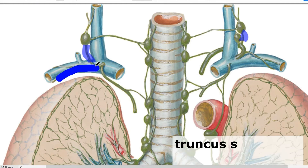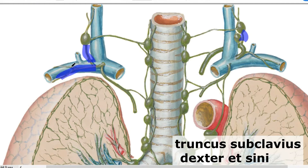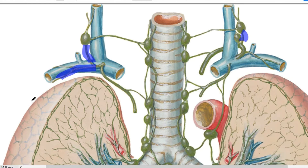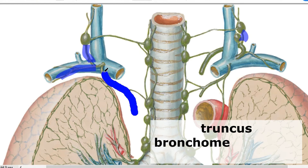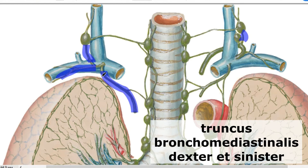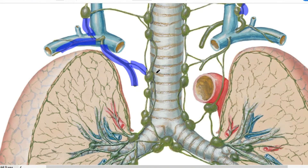The next trunk is the truncus subclavius, which runs along the subclavian vein. It is created by the efferent vessels of the axillary and subclavian lymph nodes, and lymph from your upper limb is drained into this trunk. The third trunk is the truncus bronchomediastinus, created by efferent vessels from the paratracheal and tracheobronchial lymph nodes. This trunk is responsible for drainage of lymph from the internal organs of the thoracic cage.